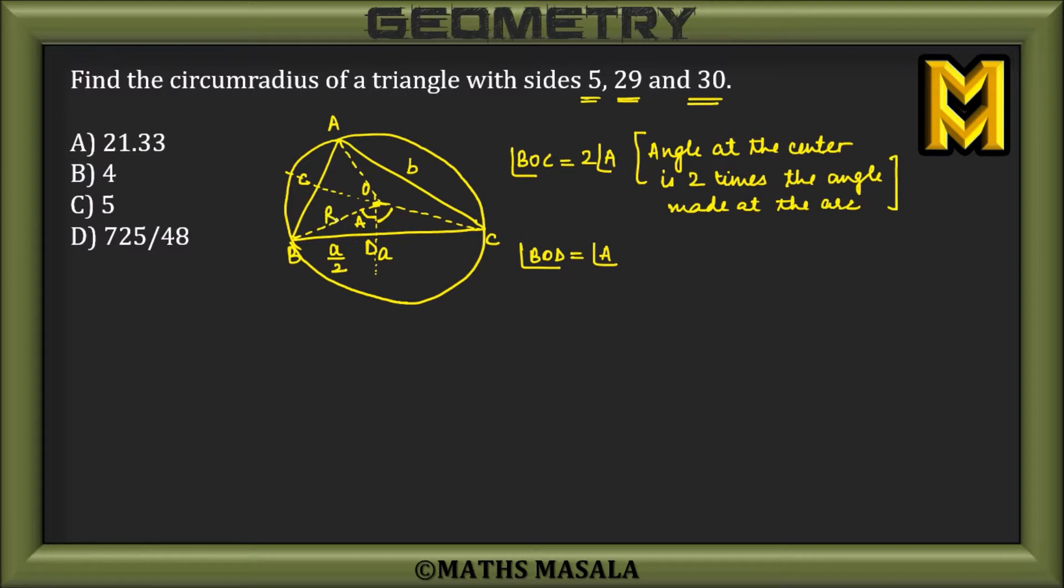is of length R. So let's try to take this triangle out of this figure. Drawing triangle BOD, now in this triangle I can say the sine of angle A would be equal to perpendicular upon hypotenuse. So sine of angle A would be equal to a/2